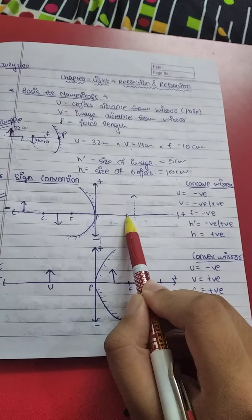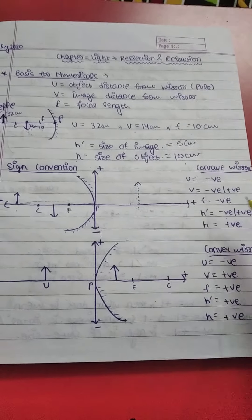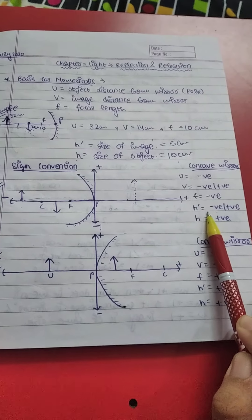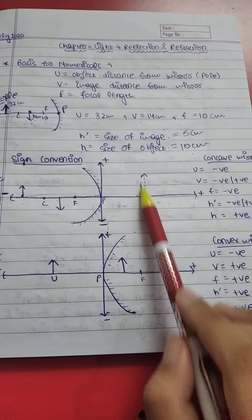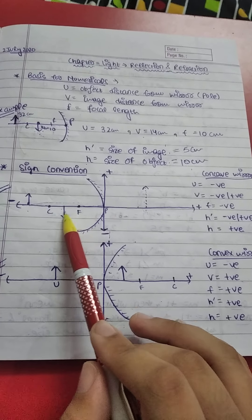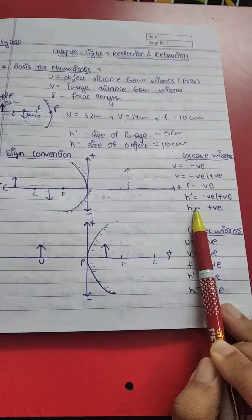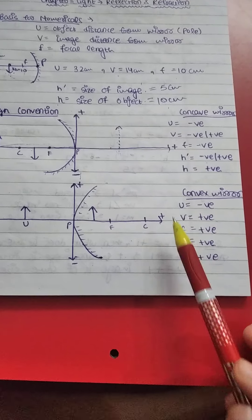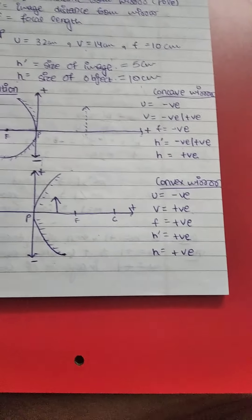Image distance V can be negative or positive depending on the situation. H' (size of image) can also be negative or positive — negative in most cases but positive for the virtual erect case. H (size of object) is always positive. For convex mirror the sign convention is the same. A quick trick: U is always negative, f for convex mirror is positive.